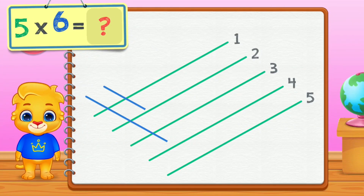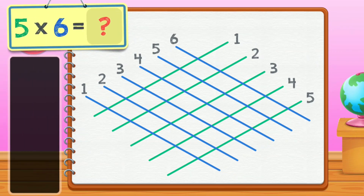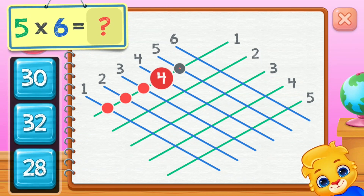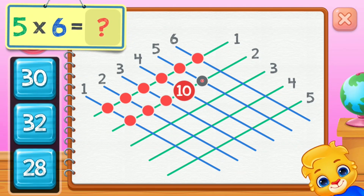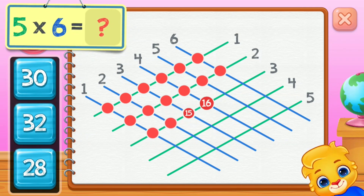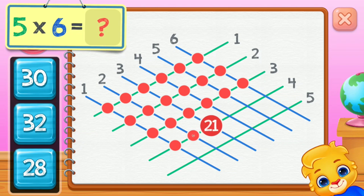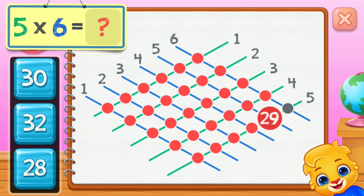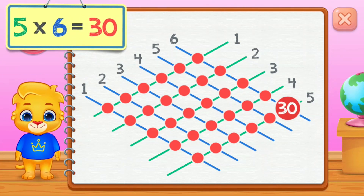Five times six equals... One, two, three, four, five, six, seven, eight, nine, ten, eleven, twelve, thirteen, fourteen, fifteen, sixteen, seventeen, eighteen, nineteen, twenty, twenty-one, twenty-two, twenty-three, twenty-four, twenty-five, twenty-six, twenty-seven, twenty-eight, twenty-nine, thirty. Five times six equals thirty.